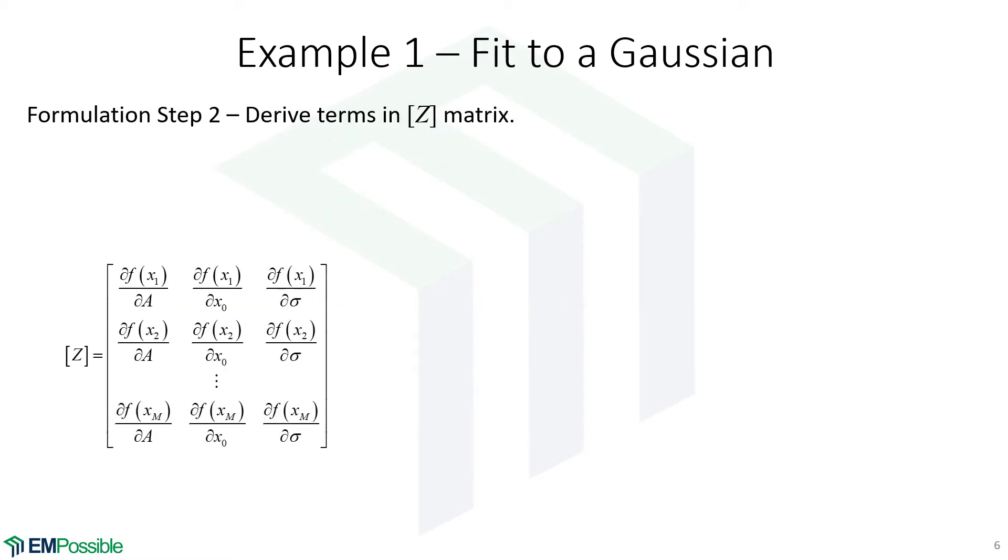We know before we get to the code, we're going to have to do a whole bunch of derivatives on paper. So that's what's happening here. Since we have three parameters, we have three partial derivatives to calculate. Skipping the algebra, the partial derivative of our function with respect to A is simply this, and that's because this is a constant multiplying A.